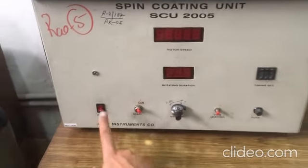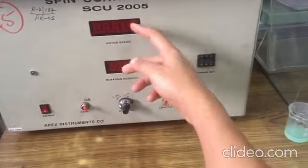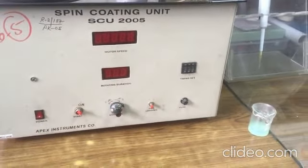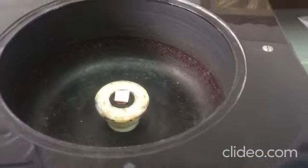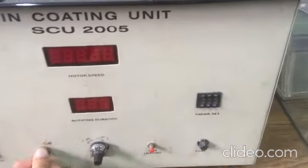Our spin coating unit has a power button, time loading button, and two displays - one for motor speed and one for rotating duration. This motor rotates, and this knob changes the speed while this button is for on and stop.